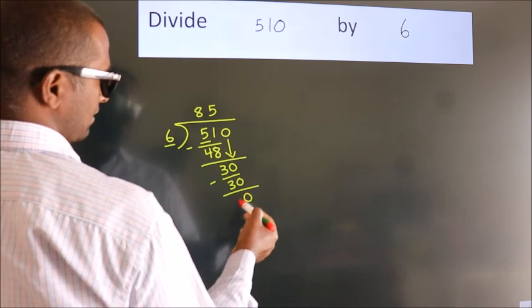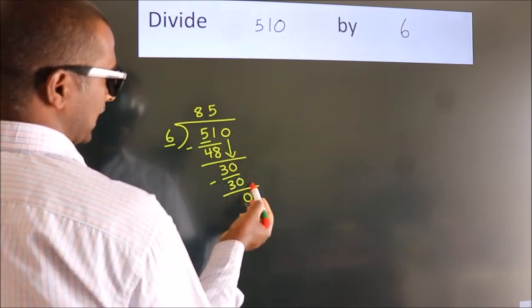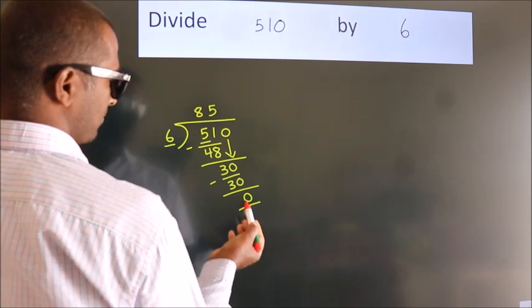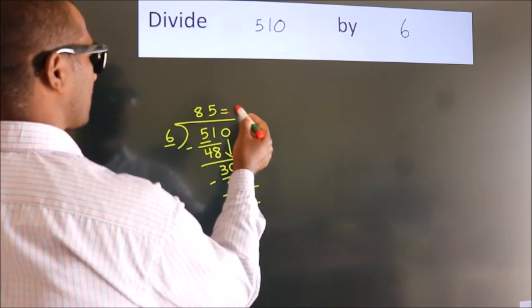After this, no more numbers to bring it down, and we got remainder 0. So, this is our quotient.